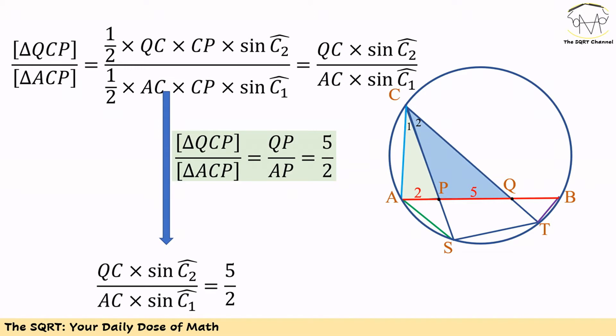Also, for these two triangles the height is the same, so the ratio of their areas equals QP over AP, which is 5 over 2. Using this, we can say QC times sine of C2 over AC times sine of C1 equals 5 over 2.